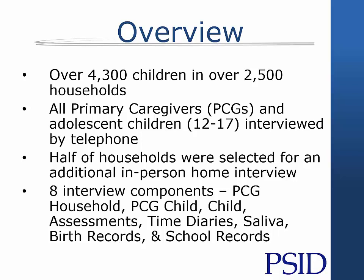All primary caregivers, or PCGs, as well as adolescent children aged 12 to 17, were interviewed individually by telephone, and half of the households were selected for an additional in-person home interview. A total of eight interview components were available for completion, depending on the age of the children and in-home sample selection status.